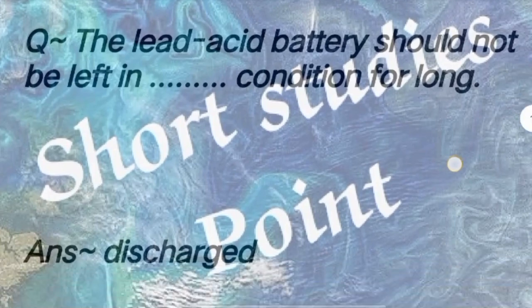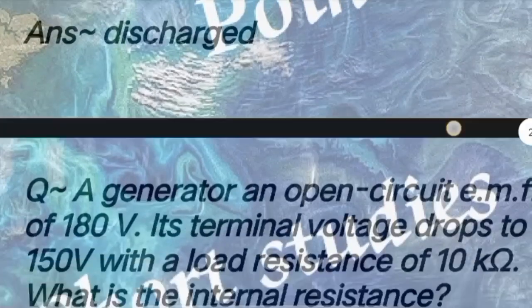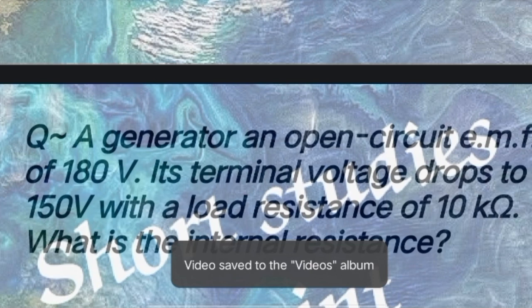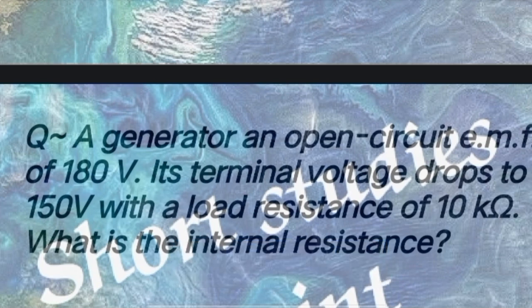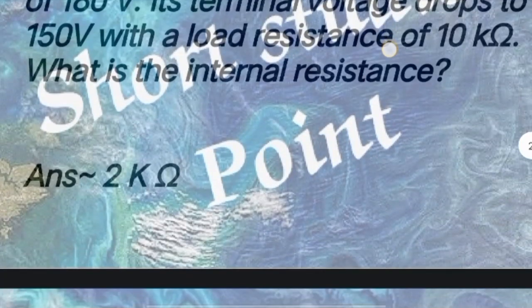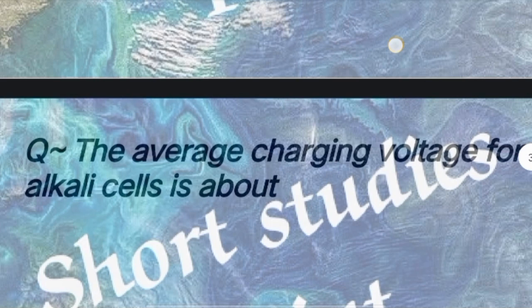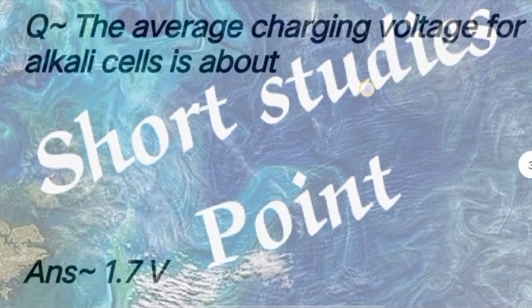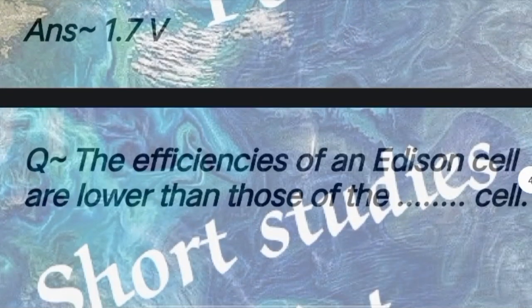Question: The lead acid battery should not be left in dash condition for long. Answer: Discharge condition. Next question: A cell has an open-circuit EMF of 180 volts; its terminal voltage drops to 150 volts with a load resistance of 10 kilohms. What is the internal resistance? Answer: 2 kilohms. Next question: The average charging voltage for alkaline cells is about. Answer: 1.7 volts.